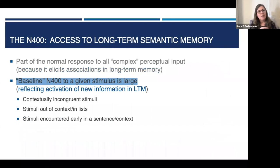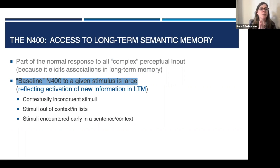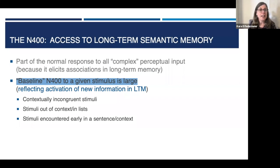I'm calling the N400 part of the normal response to these stimuli because what we might think of as the baseline N400 is a prominent response. A large N400 reflects the fact that a lot of new information is coming online in long-term memory through associations with the input. You don't get a big N400 because you do something weird and it's incongruent — it's not specific to contextually incongruent stimuli at all. It's also the response to a stimulus out of context or to words encountered early in a sentence. Looking at what's known as the N400 word position effect in language is one of the easiest ways to appreciate what the N400 is really like.